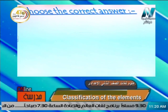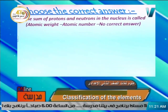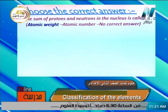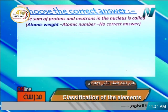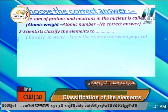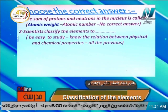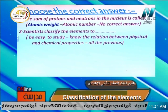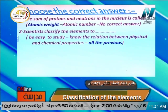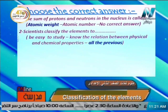Choose the correct answer. Number one: the sum of protons and neutrons in the nucleus is called the atomic weight. Next question: scientists classify the elements to — be easy to study, know the relation between physical and chemical properties, or all of the previous? Scientists attempt to classify elements for both reasons: all the previous — to be easy to study, and to know the relation between physical and chemical properties.